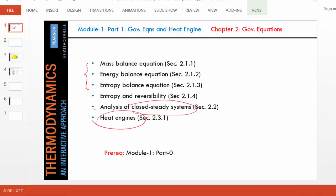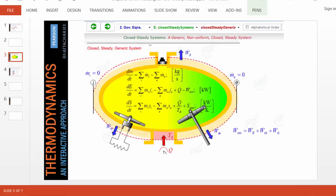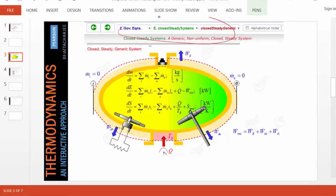Let's begin with how the equations are simplified for a closed steady system. This is a screenshot from the animation of a generic system at closed steady state. These are the governing equations: mass, energy, and entropy. At steady state, this term goes to zero.